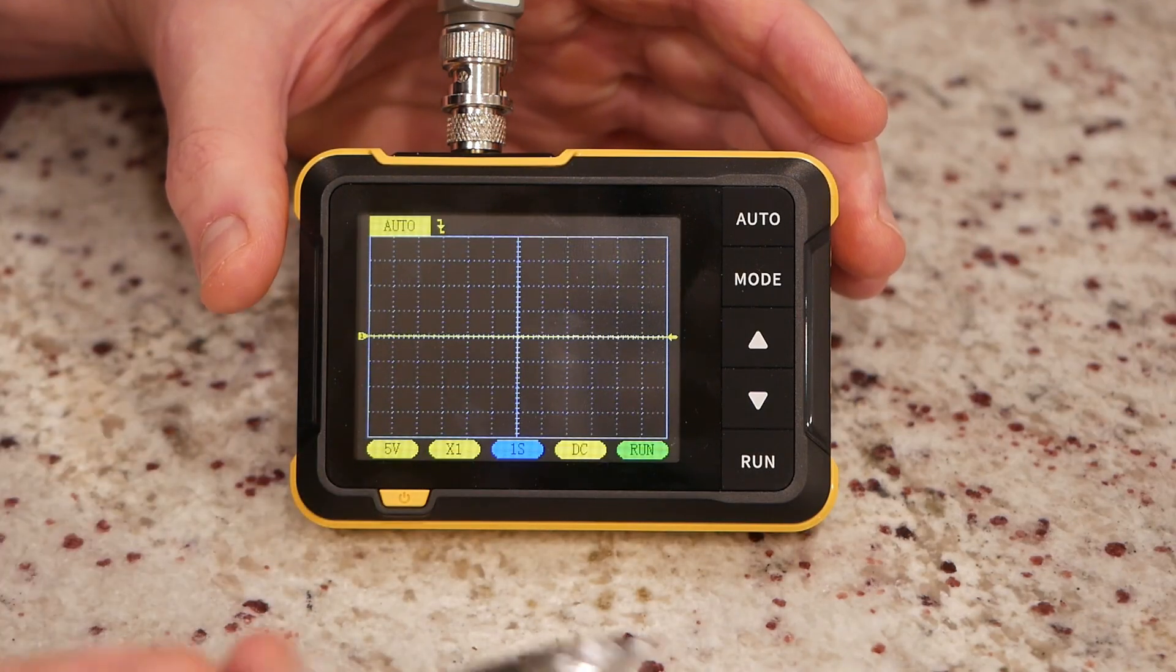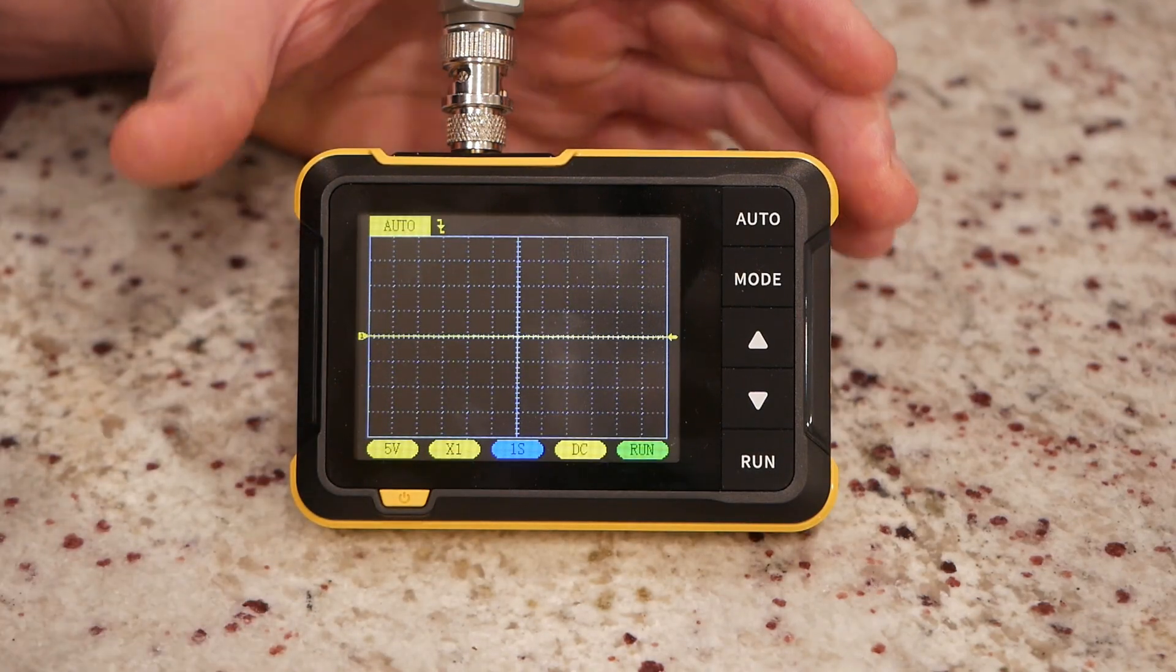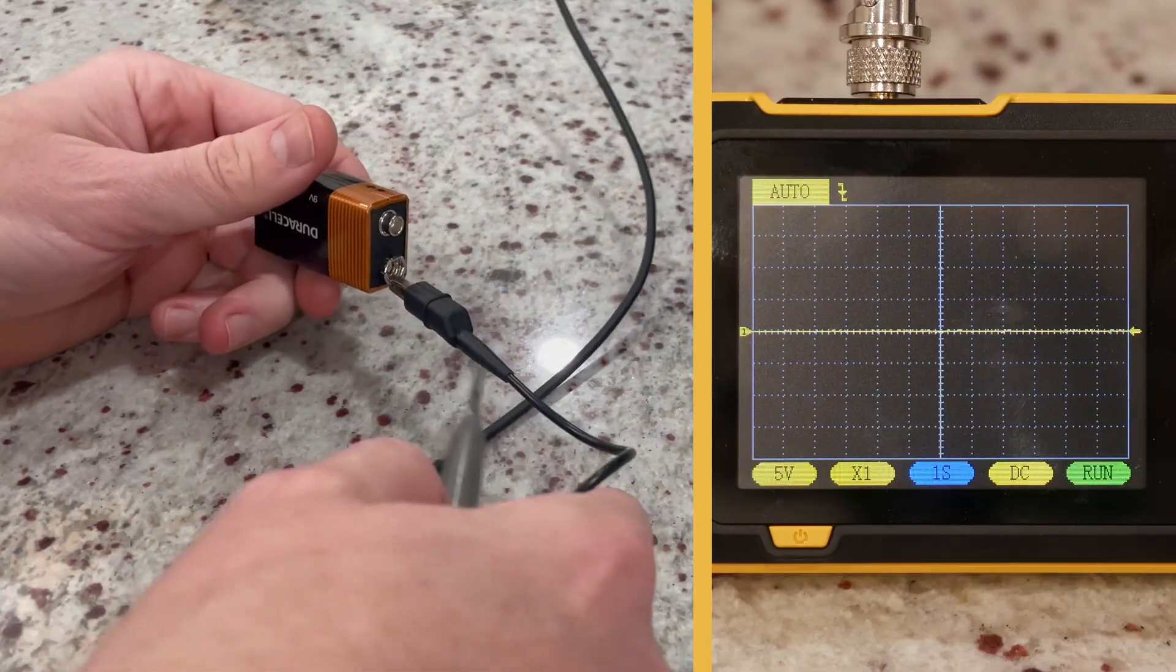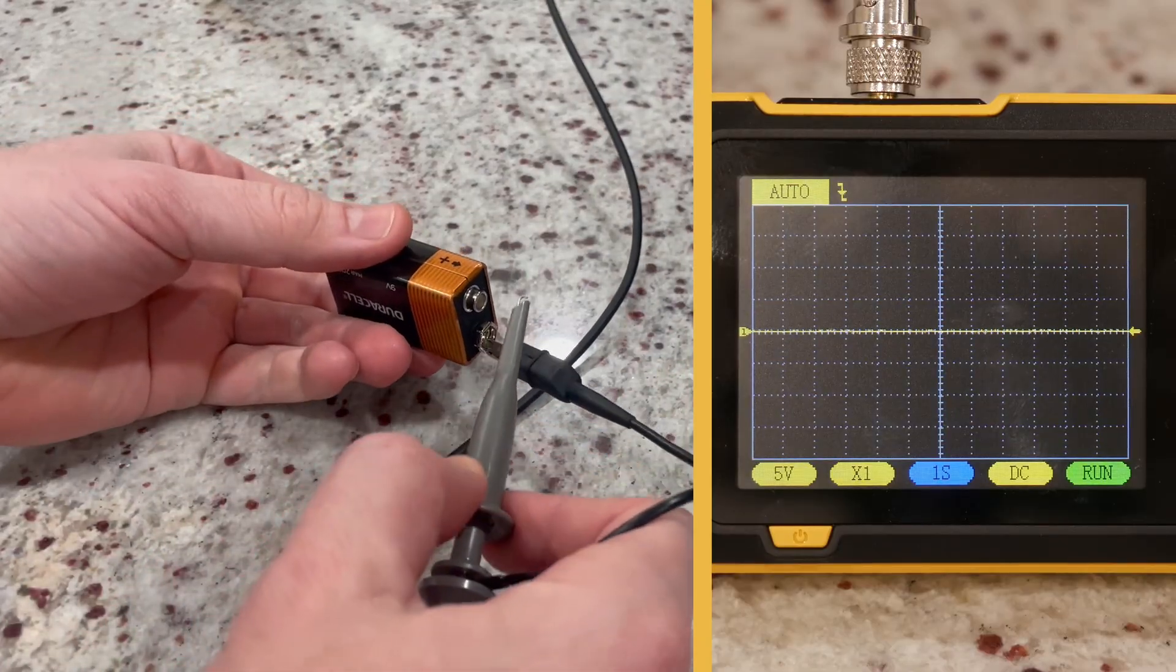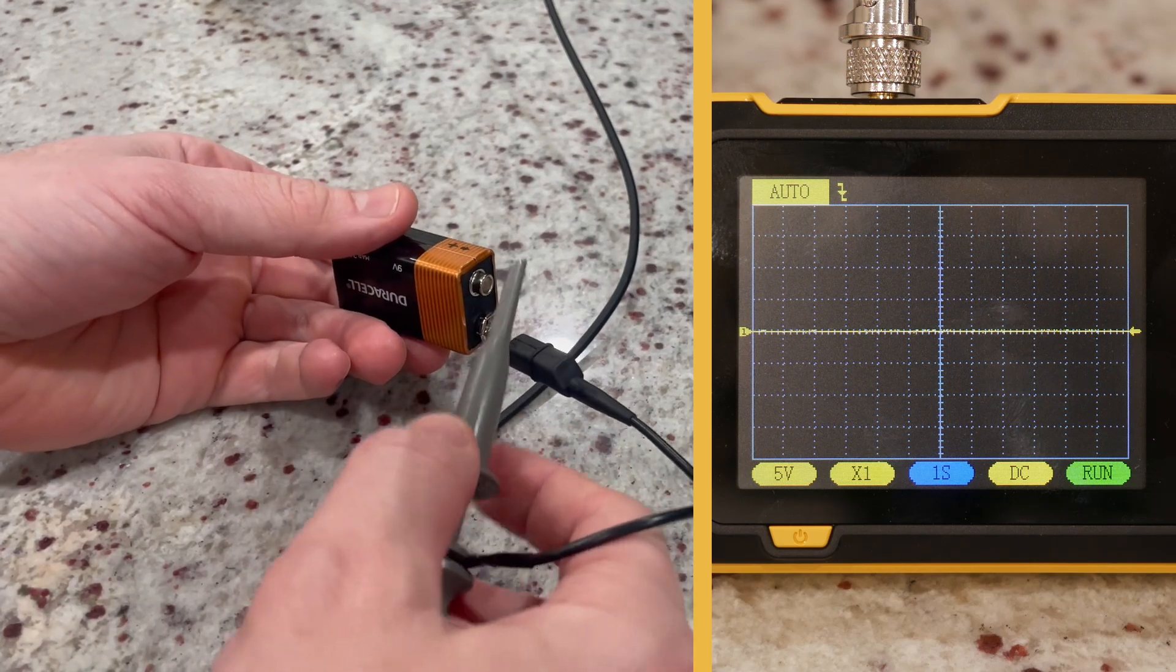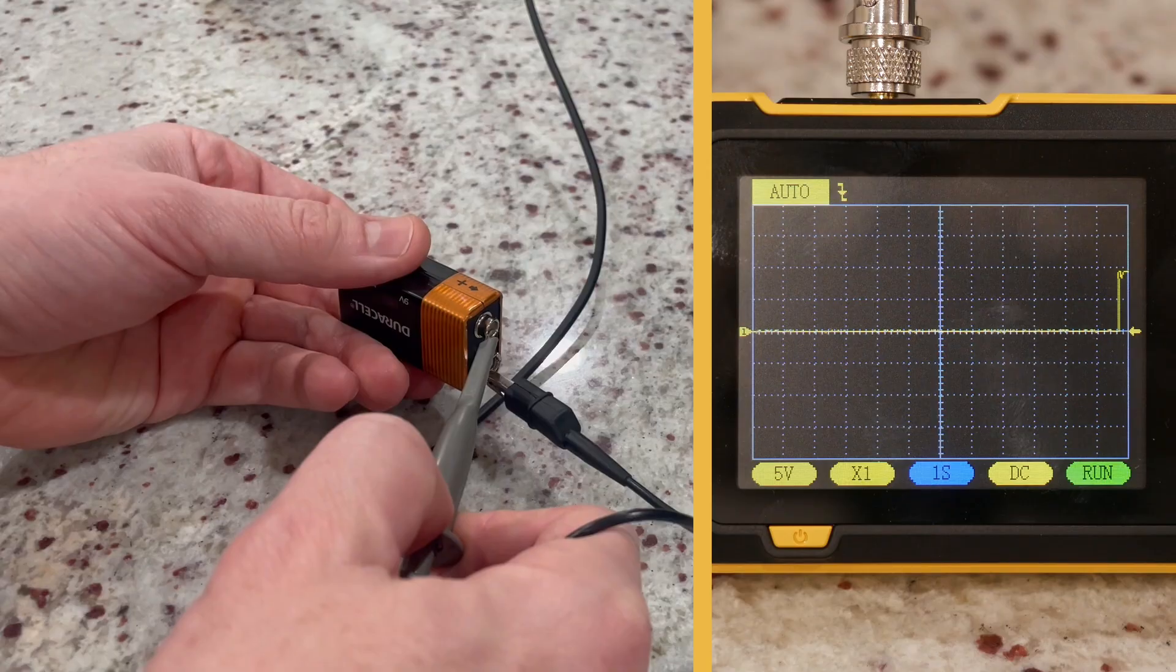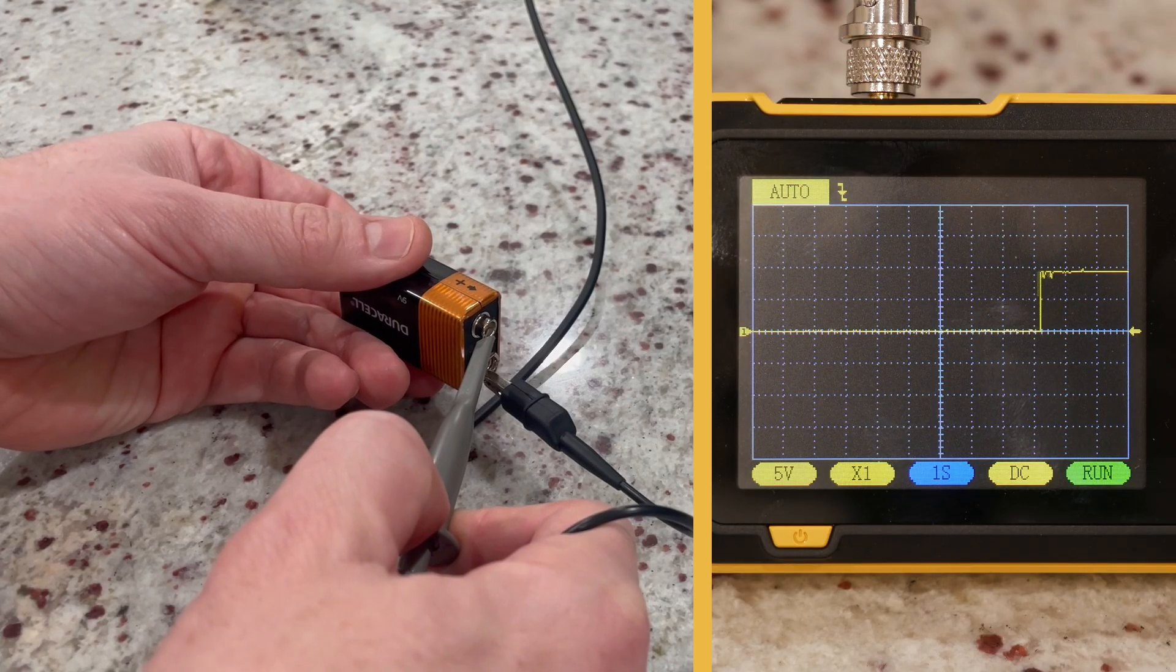Let me hook this up to a 9-volt battery and show you what I'm talking about. So remember, essentially, on that screen, we're looking at 12 seconds of history. So I've got my ground here connected to the negative side of this 9-volt battery. And as we touch it, we start seeing that voltage come across the screen.